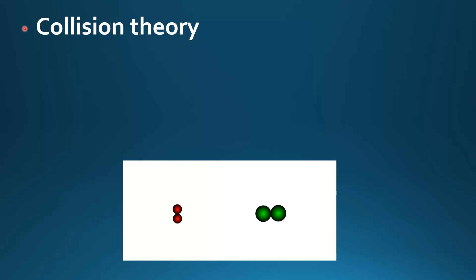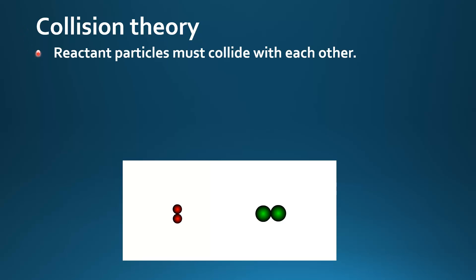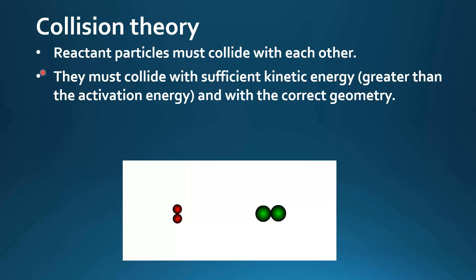Collision Theory. Reactant particles must collide with each other to have a chemical reaction. They must collide with sufficient kinetic energy greater than the activation energy, and with the correct geometry.